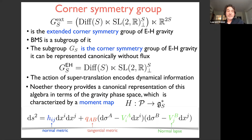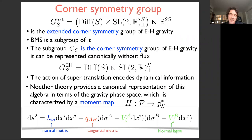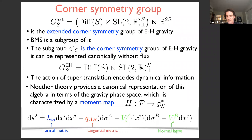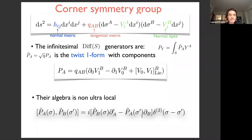Noether's theorem provides a canonical representation of this symmetry algebra in terms of the gravity phase space — technically called the moment map, which goes from the gravity phase space to the dual of the algebra. To write this moment map, we use the decomposition with sigma^a as tangent coordinates and xi as normal coordinates. The metric decomposes into a normal metric h_ij, the tangential metric, and a generalized notion of lapse.